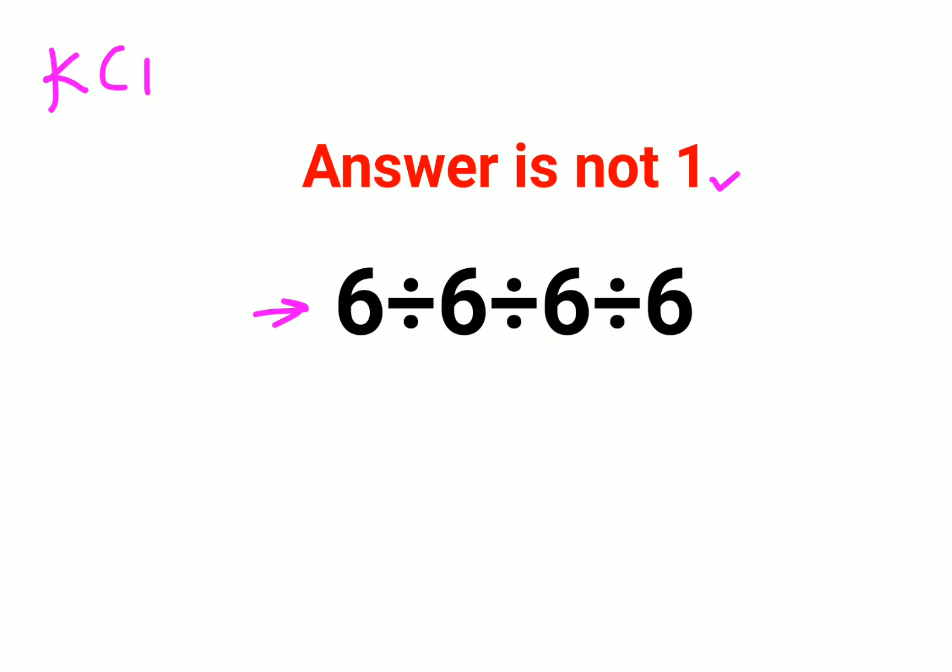always follow the rule of KCF. That means you keep the first number as it is, which is 6. You change the division sign to multiplication and flip or take the reciprocal of 6, which is 1/6. Similarly, for this division sign changes to multiplication, taking the reciprocal of 6, which is 1/6. Here also you change the division sign to multiplication and take the reciprocal of 6, which gets you 1/6. So these cancel and the answer comes out to 1/36.